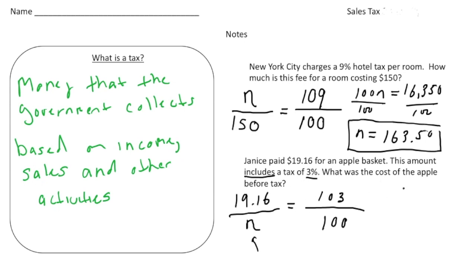So it's going to be 103 times n, so it's 103n. That's going to equal $19.16 times 100, which is going to be $1,916. And now when I divide both sides by 103, 1,916 divided by 103 gives us $18.60. So n's going to be $18.60. I rounded that to the nearest penny. So that was the cost of the apple basket before the 3% sales tax was added.